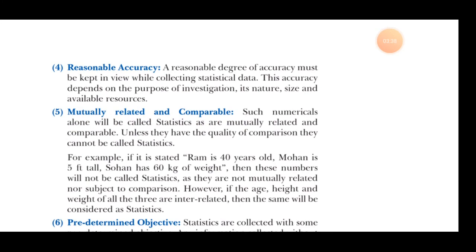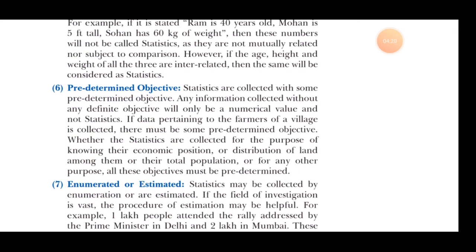Fourth, reasonable accuracy — whatever data is written, it should match with accuracy. Fifth, mutually related and comparable — all data should be mutually related and comparable with each other. For example, Ram's age is 40 years, Sohan's weight is 60 kg, and Mohan's height is 5 feet — these are data but they are not comparable or mutually related. Sixth, pre-determined object — statistics are collected with some pre-determined objective; without any motive, data collection has no purpose.